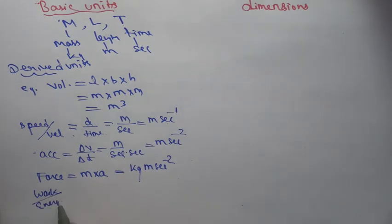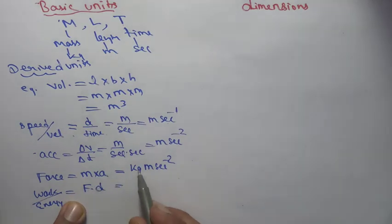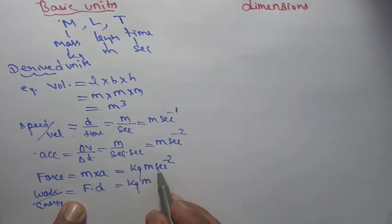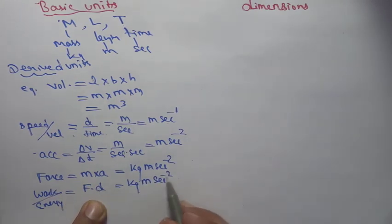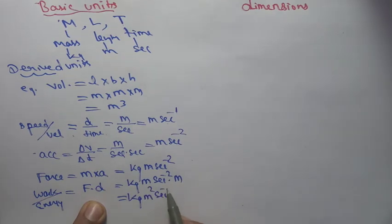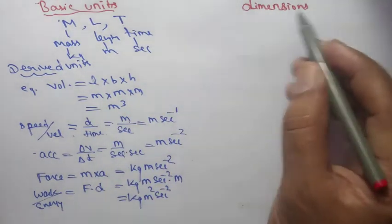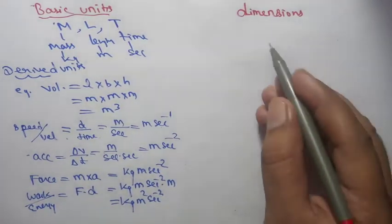Work or energy = force × displacement. Force is kg m s⁻², displacement is in meters, so work = kg m² s⁻². All of these are derived units. But our chapter is dimension — that is our important topic.